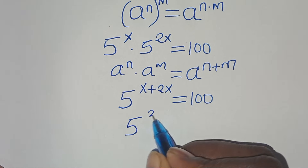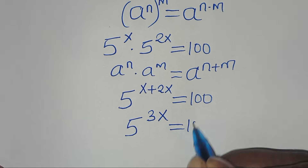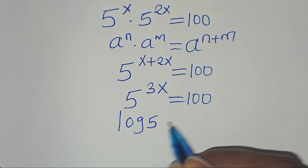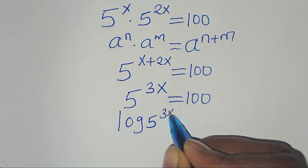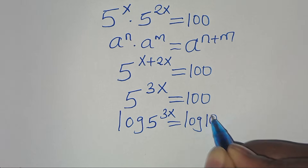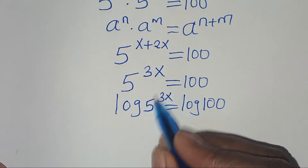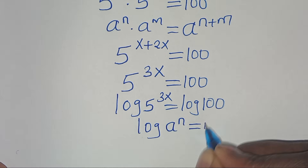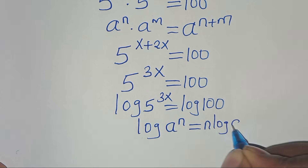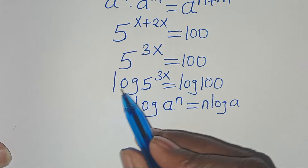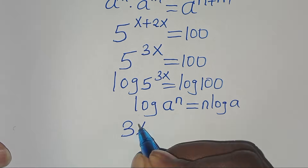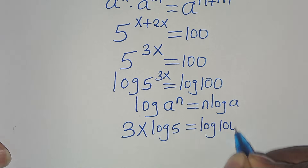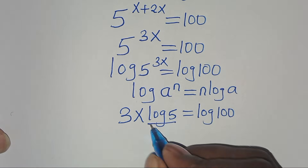We have 5 to the power of 3x equals 100. To solve for x, we introduce logarithm on both sides: log of 5 to the power of 3x equals log of 100. This is in the form of log a to the power of n, which we can express as n times log a. Applying this power property, 3x times log 5 equals log 100.